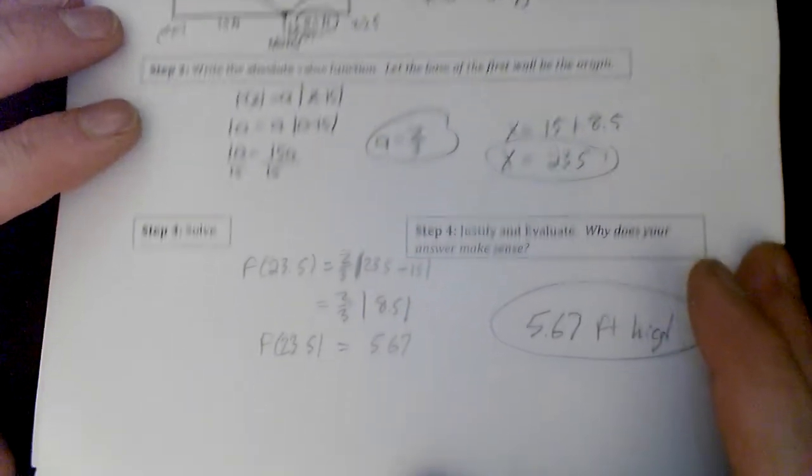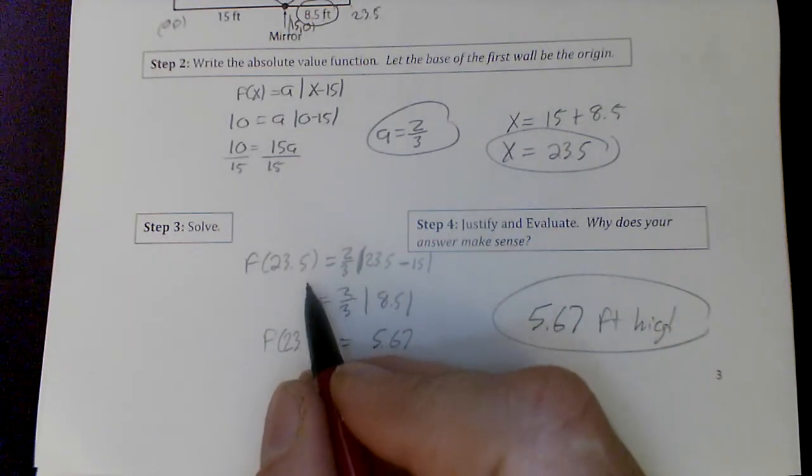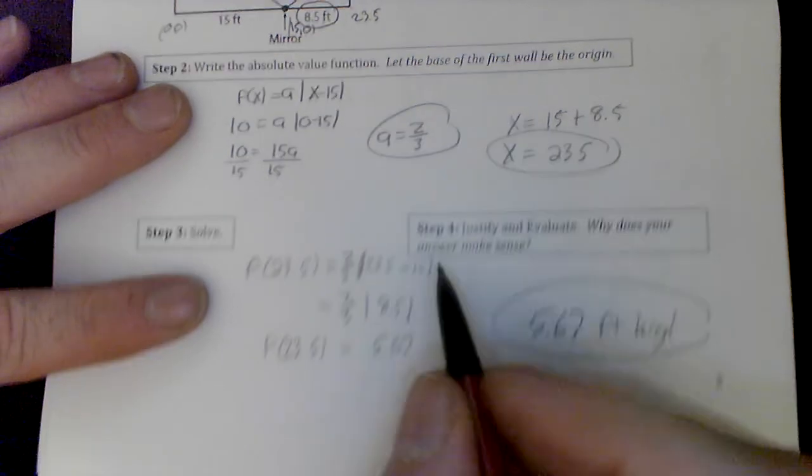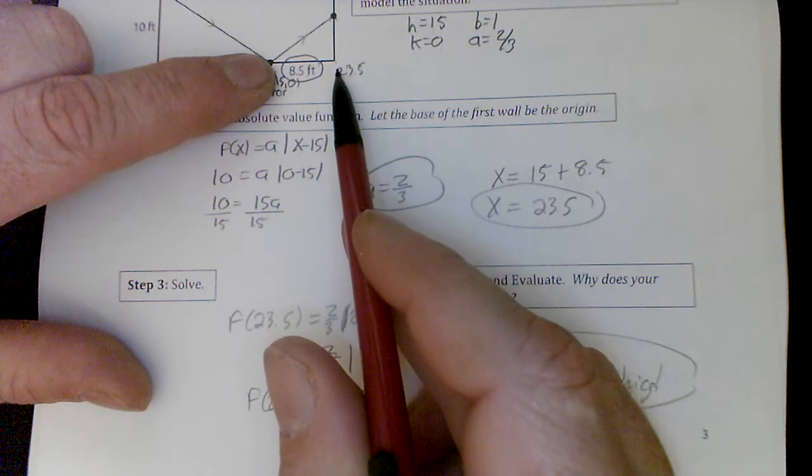So plugging that in, if I plug in my input of 23.5 into the equation that we came up with, I get 23.5 minus 15. Well, guess what? That's just going to be 8.5, because that's really asking, how far away from the vertex am I going to be?